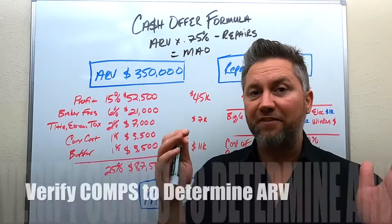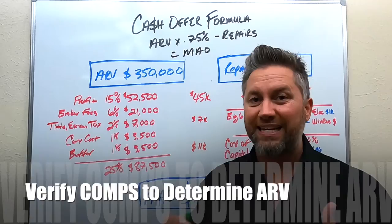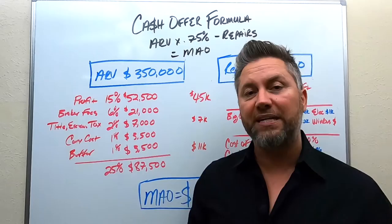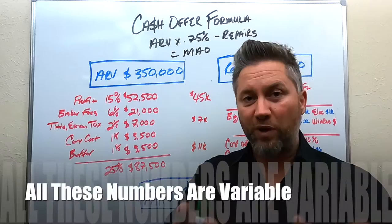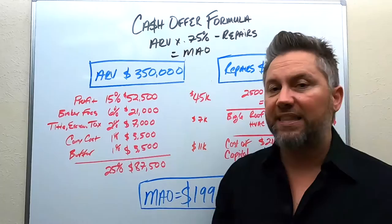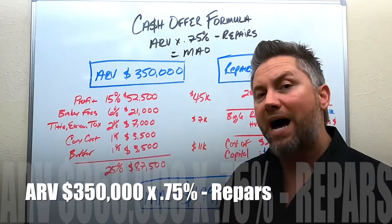You need to make sure that you dive into the MLS to actually verify this data before you start running your numbers. We like to take a conservative approach — not the highest price — but once we get the properties done we typically try to take them over market to capture a little more profit. Make sure you're running your comps on a conservative, verified price per square foot. $350,000 is where we're starting today.